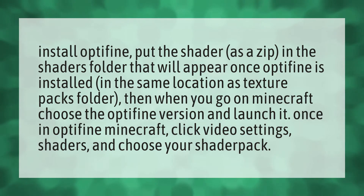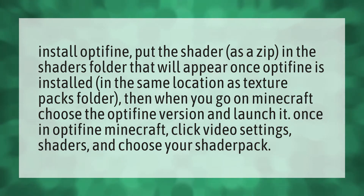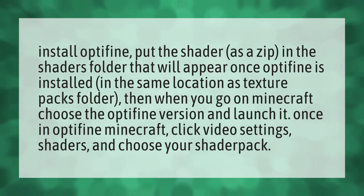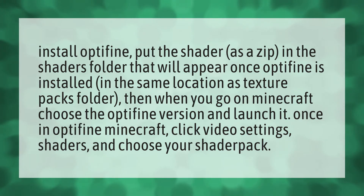Install Optifine. Put the shader as a zip in the shaders folder that will appear once Optifine is installed, in the same location as the texture packs folder. Then, when you go on Minecraft, choose the Optifine version and launch it. Once in Optifine Minecraft, click Video Settings, then Shaders, and choose your shader pack.